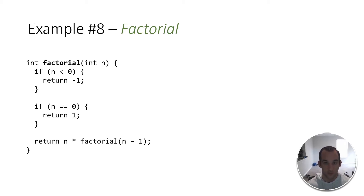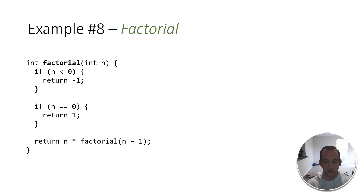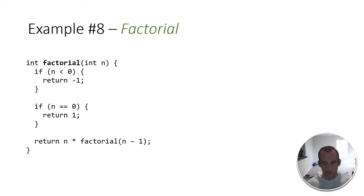We're here for another coding interview question, and this one is still going to be about Big O notation. But I'm only doing one example this time because it's based on recursion. And this algorithm, finding the factorial of a number, is probably one you're always introduced to in the beginning when you're starting to learn recursion.